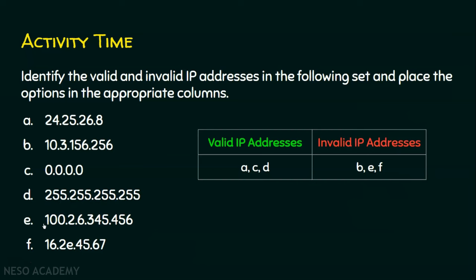E is an invalid IP address for two reasons. Number one, it has five octets instead of four. Number two, the range in some octets is not appropriate — there are values like 345 and 456, which are not between 0 and 255. Coming to option F, this is also an invalid IP address because there is an octet containing the characters '2E', which is a hexadecimal character. IPv4 addresses must be in decimal only, so F is also not valid.